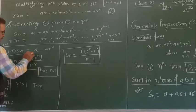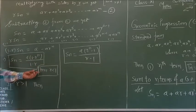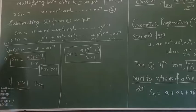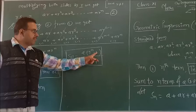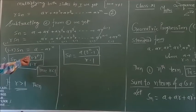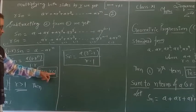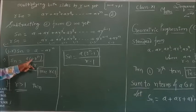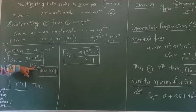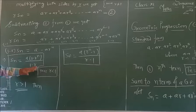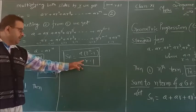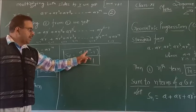This formula gives us the sum of n terms of GP. When r < 1, we use S_n = a(1 - r^n) / (1 - r). And if r > 1, then we use S_n = a(r^n - 1) / (r - 1).